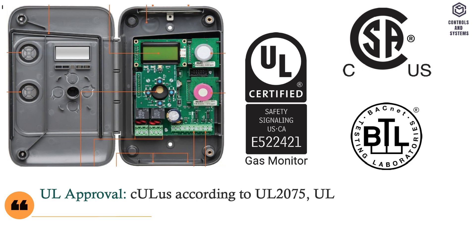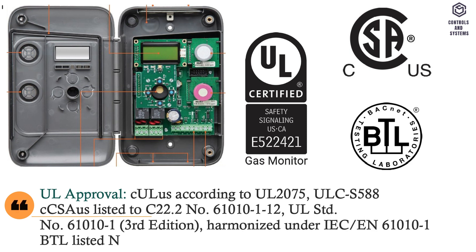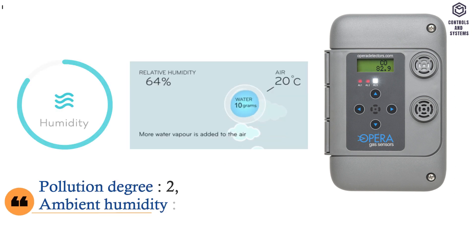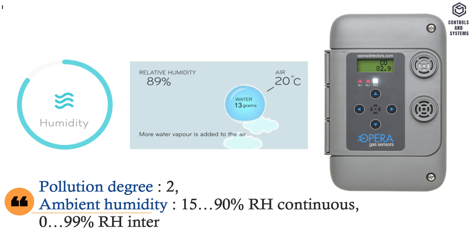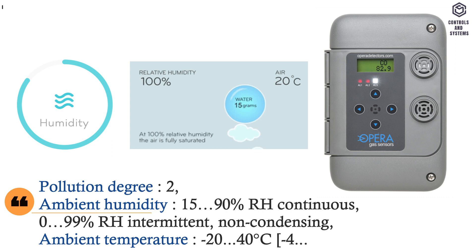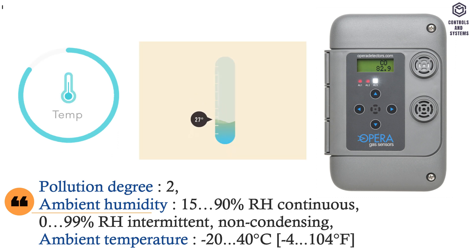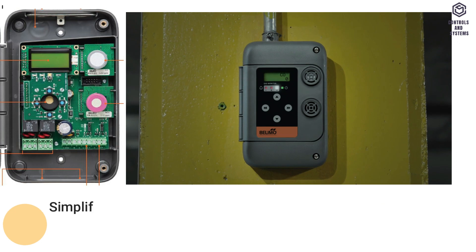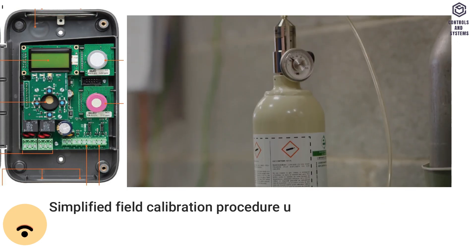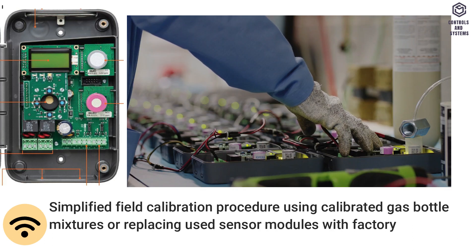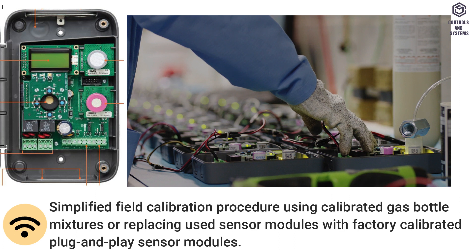Other data. UL approval covers Canada and the United States by Underwriters Laboratories certification. Pollution degree is 2. Ambient humidity: 15 to 90 percent RH continuous, 0 to 99 percent RH intermittent, non-condensing. Ambient temperature is minus 20 to 40 degrees Celsius. Calibration: sensor modules are recommended to be calibrated annually. Simplified field calibration can be done using calibrated gas bottle mixtures or by replacing used sensor modules with factory calibrated plug-and-play sensor modules.